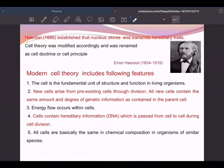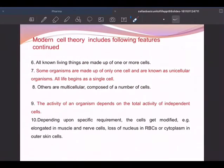All cells are basically the same in chemical composition in organisms of similar species. This is modern cell theory. This includes also all known living things are made up of one or more cells, either unicellular like amoeba, paramecium, euglena, or multicellular like us. Some organisms are made up of only one cell and are known as unicellular. All life begins at a single cell. Others are multicellular.